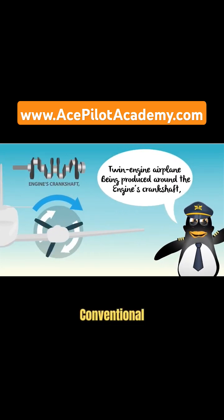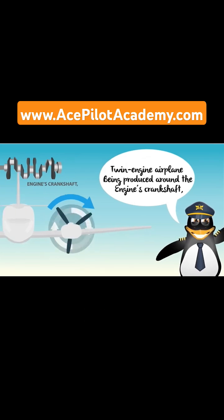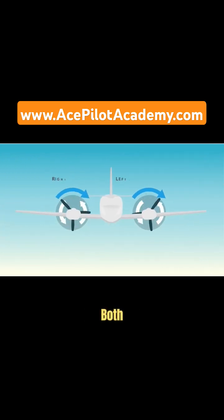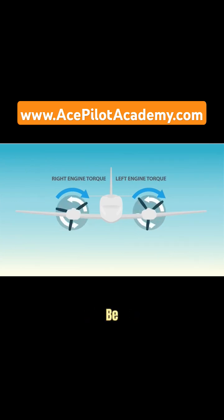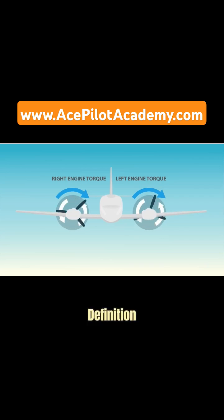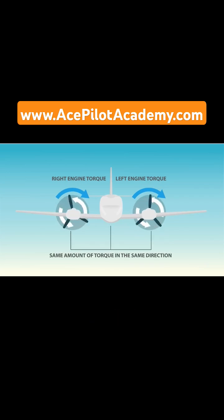In a conventional twin-engine airplane, torque is produced around each engine's crankshaft, and both engines are the same distance from the aircraft's centerline. Neither engine would be considered the critical engine by definition, since each engine is creating the same amount of torque in the same direction.